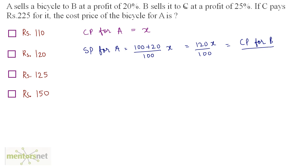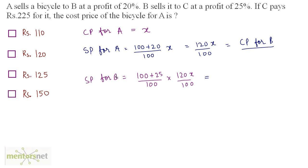B sells the bicycle to C at a profit of 25%. So the selling price for B equals (100 + 25)/100 times the cost price for B, which is 125/100 × 120X/100. This amount is also what C paid for the bicycle. Since C pays Rs. 225, we set 125/100 × 120X/100 = 225.